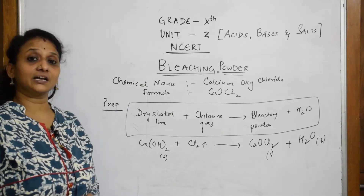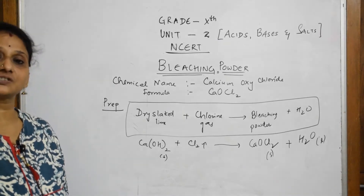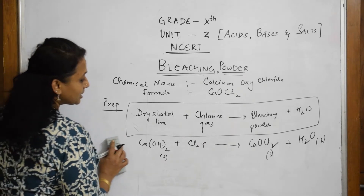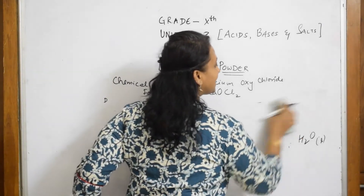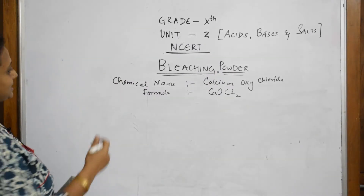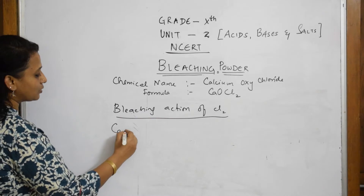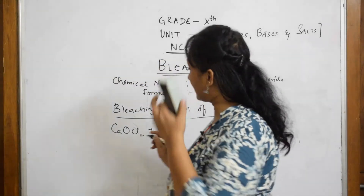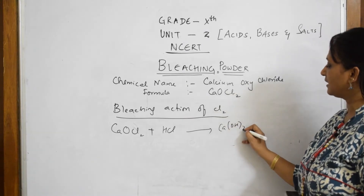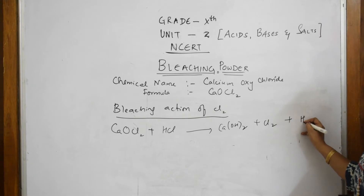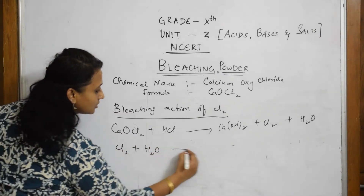Now an important question: why is it called bleaching powder? What is the bleaching action? Why is it able to bleach clothes? The heading is 'Bleaching Action of Chlorine' — this is a little beyond your textbook. When HCl is added to bleaching powder, it breaks apart forming calcium hydroxide again, and chlorine is evolved along with water.